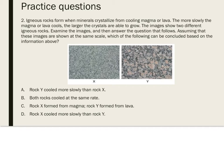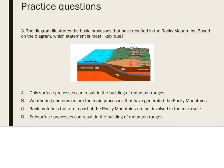Question three: the diagram illustrates the basic processes that resulted in the Rocky Mountains. Based on the diagram, which statement is most likely true? Subsurface processes can result in the building of mountain ranges like the Rocky Mountains. Surface and subsurface processes are involved in the rock cycle, and some subsurface processes — such as the sliding of one tectonic plate beneath another — can result in changes to the earth's surface. The answer is D.